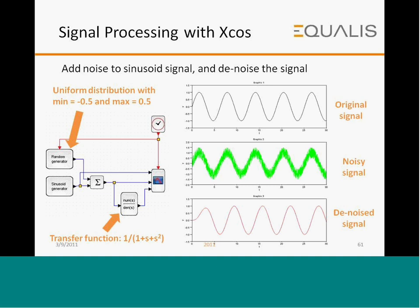Signal processing in Xcos: the block diagram shows a sinusoidal generator producing a sine wave. A random generator adds noise to the signal. A filter is then applied — the original sinusoidal signal, the signal with noise, and the filtered signal are all shown. Running the simulation gives the original signal plot, the noisy signal, and the denoised signal. The filter used has transfer function 1/(1 + s + s²).